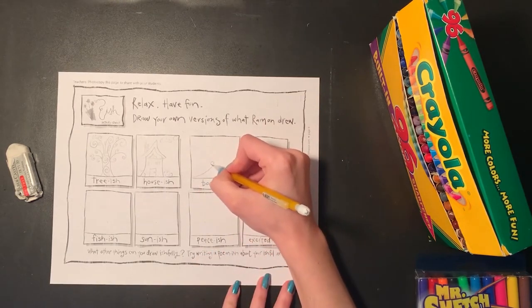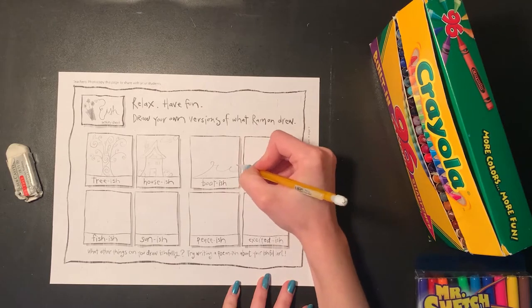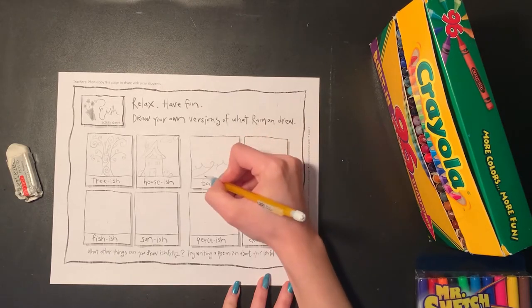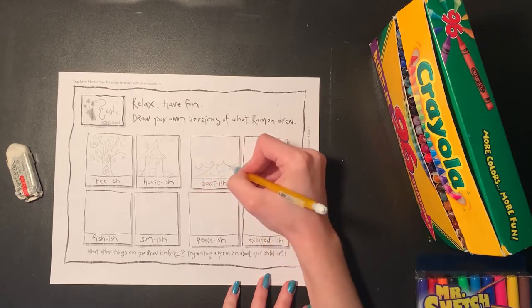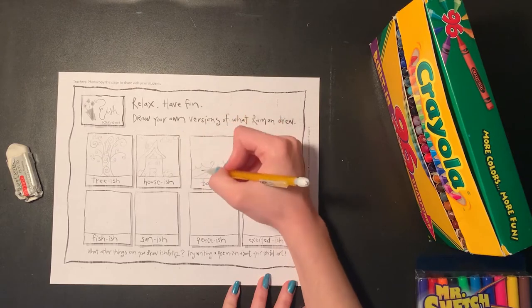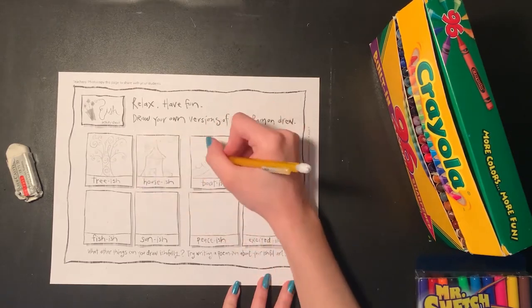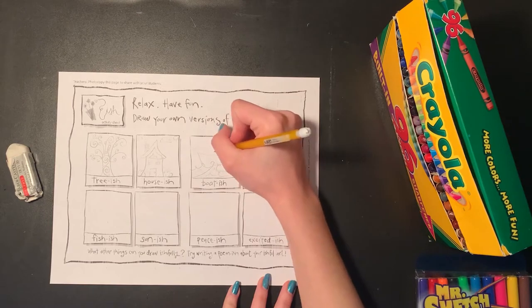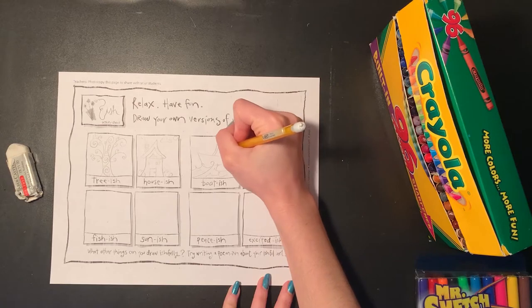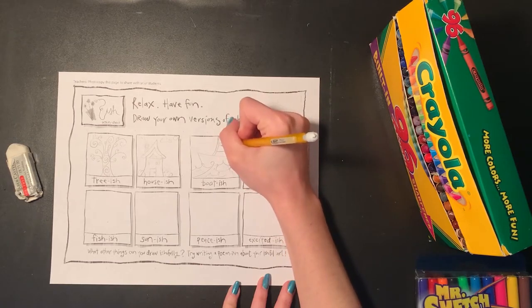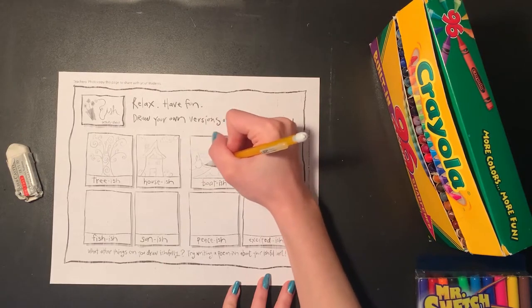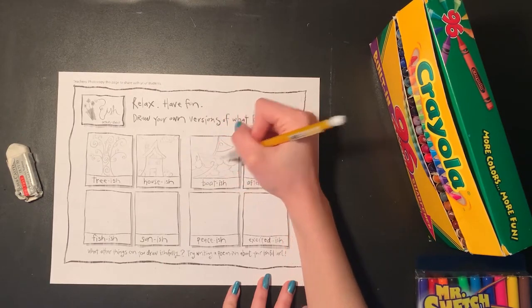The next one says boat-ish. So I'm going to draw a big crazy ocean with some waves. And you'll notice inside each of these, I'm doing a full image. So I have a background and a sky with my house. My tree is taking up most of that box. We want our sketches and our ideas to be complete ideas to help us once we create our larger picture. So I'm making a nice big sailboat going through my water. I'm adding some decorations and designs on my boat. And I'm going to draw some birds in the sky.